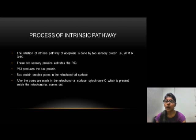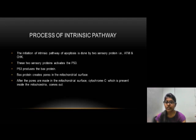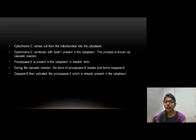Now, how does the intrinsic pathway of apoptosis take place? The initiation is done by two main sensory proteins, ATM and CHK. These two sensory proteins activate the P53 protein. P53 protein produces the BAX protein, and BAX protein creates pores in the mitochondrial surface. After the pores are made, cytochrome C, which is present inside the mitochondria, comes out into the cytoplasm. Cytochrome C combines with Apaf-1 present in the cytoplasm, initiating the cascade reaction, in which Procaspase-9 is present in an inactive form. During the cascade reaction, Procaspase-9 is cleaved to form active Caspase-9.